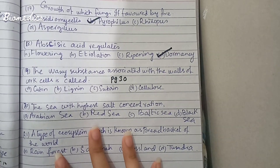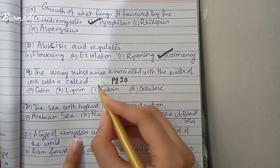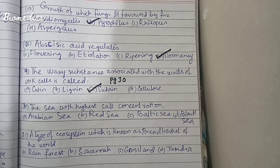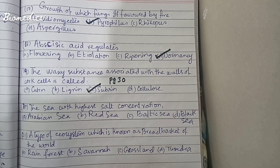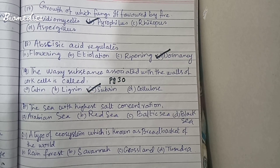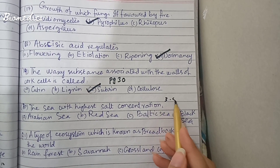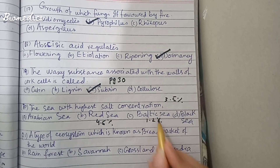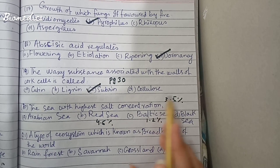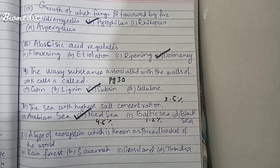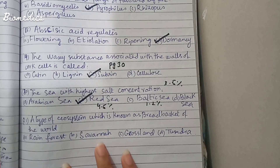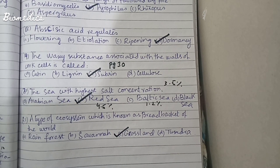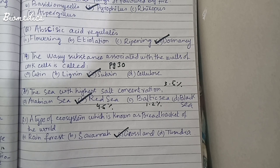The substance associated with the walls of cork cells is called suberin — highlighted on page 30. Cork cells and cork cambium are associated with suberin. Regarding sea salt concentration, normal marine salt concentration is 3.5%, the Red Sea has 4.6%, and the Baltic Sea has 1.2%. The Red Sea has the highest salt concentration. The type of ecosystem known as the bread basket of the world is grassland.